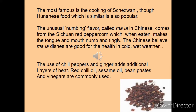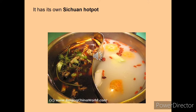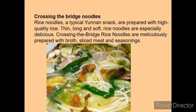They use one chili flavor as an important ingredient, and cooking styles are also unusual. Sichuan cuisine features one pepper which gives hotness to the food — that is why Sichuan food is very hot and spicy. Then there is Yunnan ham, which has thin skin, thick meat, a bright color and a strong aroma. A famous dish of this region is crossing the bridge noodles, made from high quality rice. Thin, long and soft rice noodles are specially delicious, meticulously prepared with broth, sliced meat and seasoning.